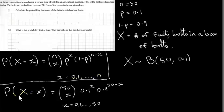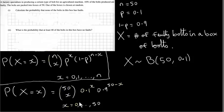For our example, the probability that X takes on the value little x is 50Cx times 0.1 to the power of x times 0.9 to the power of 50 minus x, because N is 50 and P is 0.1. And x runs from 0 up to N, so x runs from 0 up to 50.